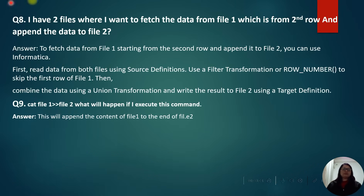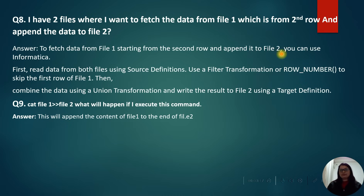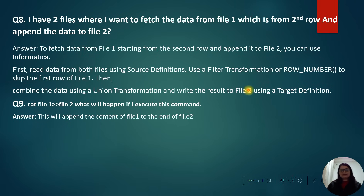The next question: I have 2 files and I want to fetch the data from file 1 starting from the second row and append it to file 2 — how can you achieve this scenario in Informatica? First, read the data from both files using source definition. Use the filter transformation or row number to skip the first row of file 1. Then combine the data using the union transformation and write the result into file 2 using the target definition.